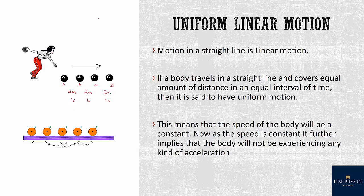What will be the speed then? Speed is always distance divided by time. The distance from A to B is 2 meters and the time is 1 second, so the speed is 2 meters per second. Similarly, the speed from B to C is 2 meters per 1 second — 2 meters per second. This means the speed of the body is constant.